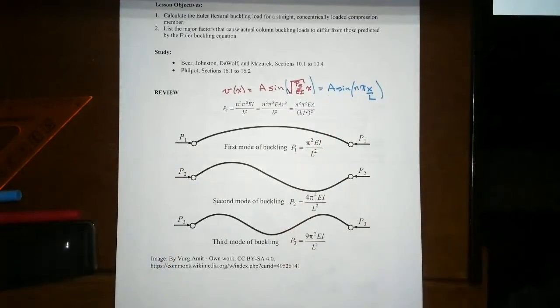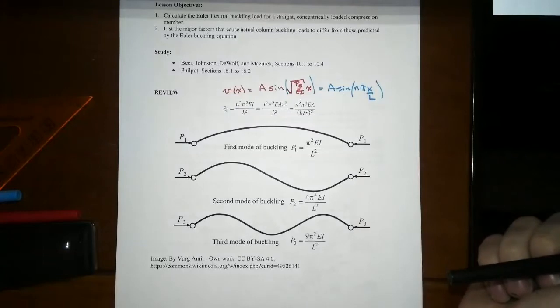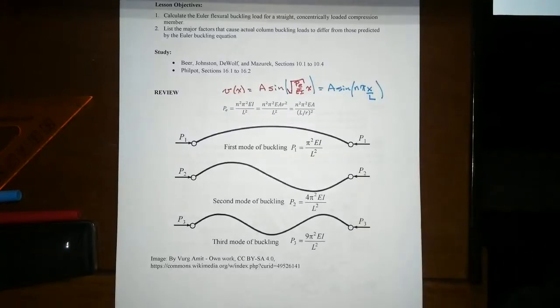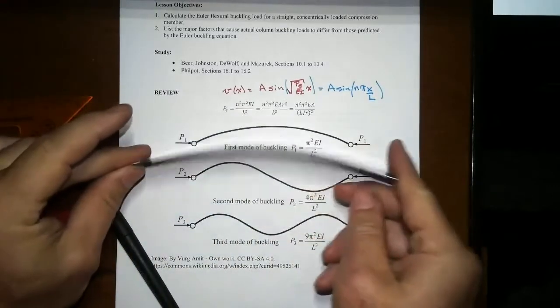Now the A, that constant that sits out there, this all tells us that in the buckling mode, we don't know what the actual scale of the deflection is. When it buckles, pop, it goes. We're loading it up, loading it up, boom, pop.